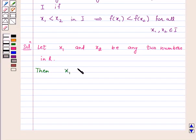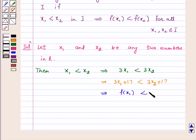x1 less than x2 implies 3x1 less than 3x2. This implies 3x1 plus 17 is less than 3x2 plus 17. This implies f of x1 less than f of x2.